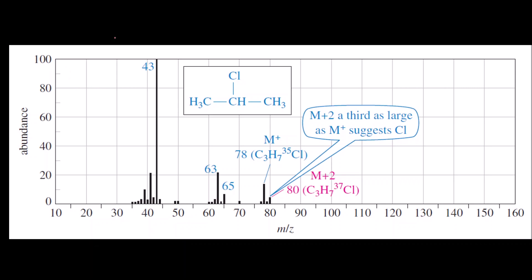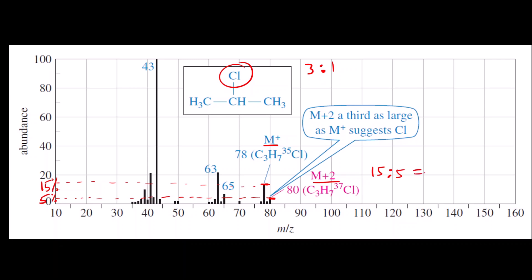Let us now see how the mass spectrum looks for each case. For chlorine, the M+ ion peak is at approximately 15 relative abundance and the M+2 ion peak is at approximately 5. The ratio 15 to 5 is 3 to 1, so the heteroatom is chlorine.